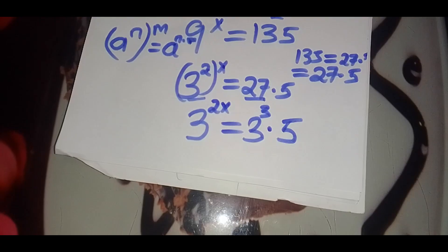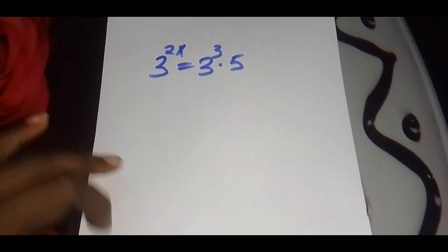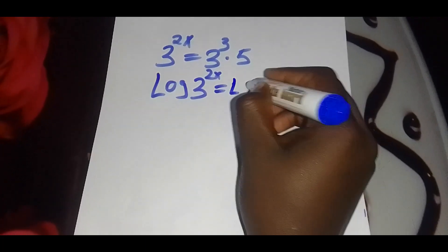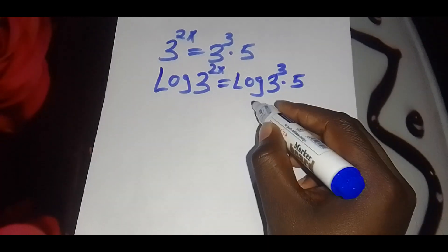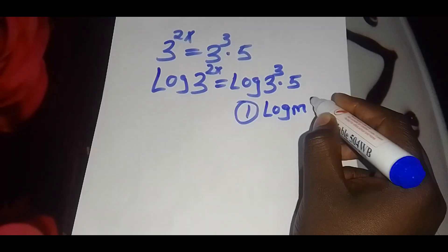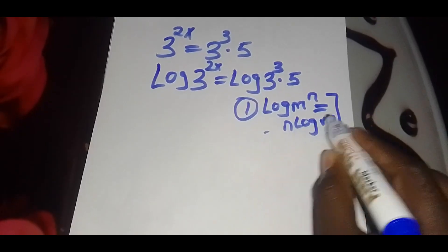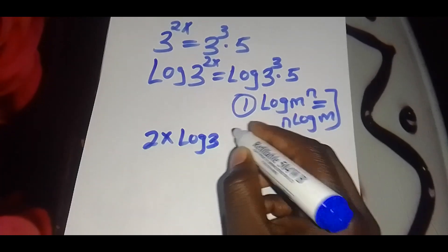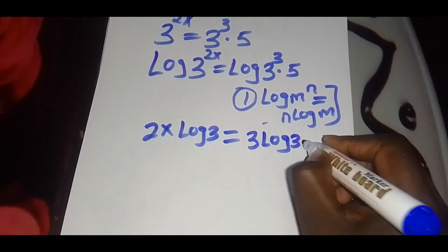For the value of x, we introduce the natural logarithm, so that we'll have log of 3 raised to the power 2x equals log of 3 raised to the power 3, multiplied by 5. We introduce the first logarithm property that states that if you have log of m raised to the power n, this can be expressed as n times log m. Applying this identity, we get 2x log 3 equals 3 log 3 multiplied by 5.